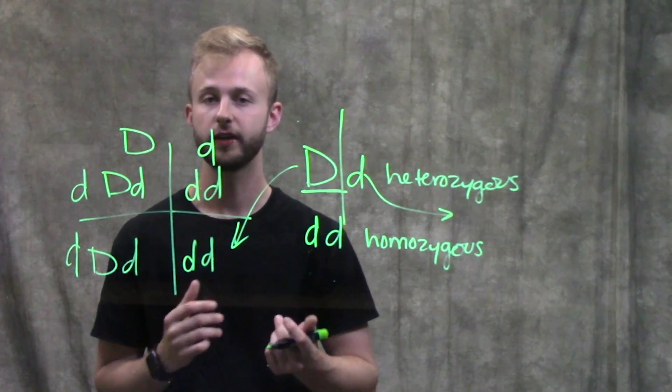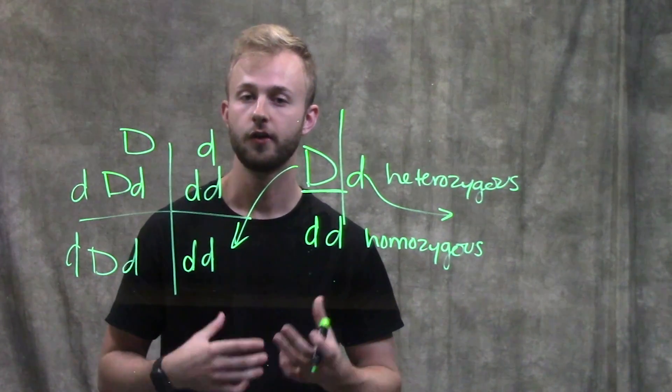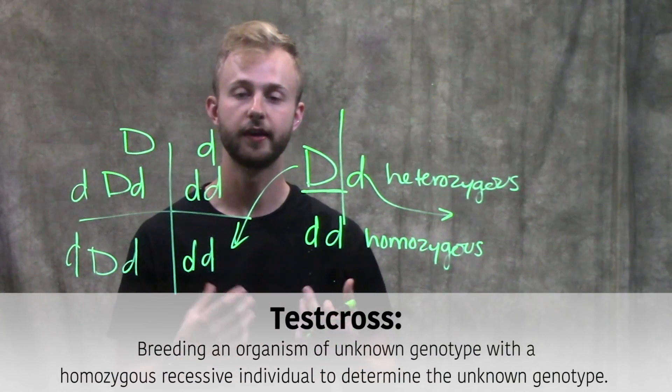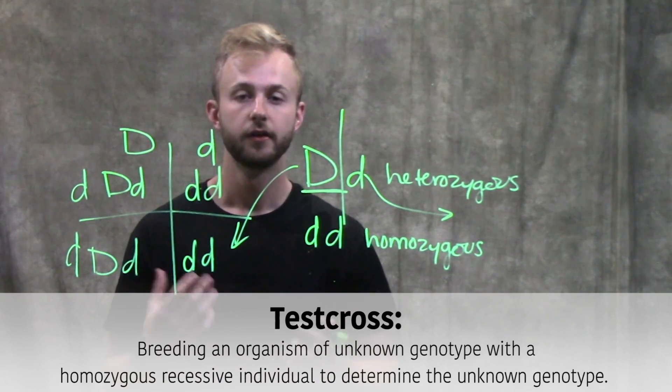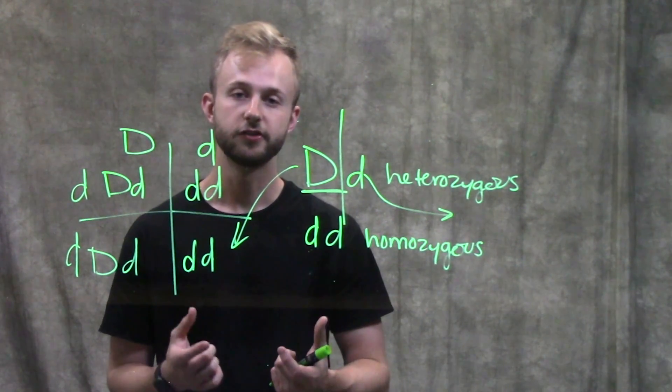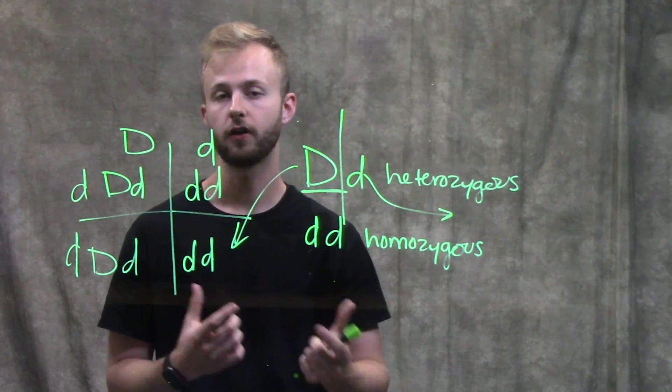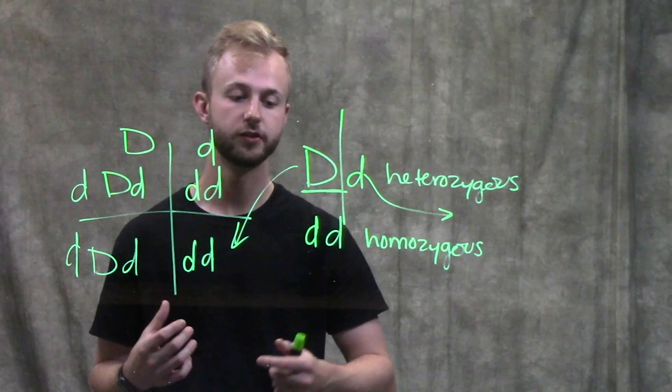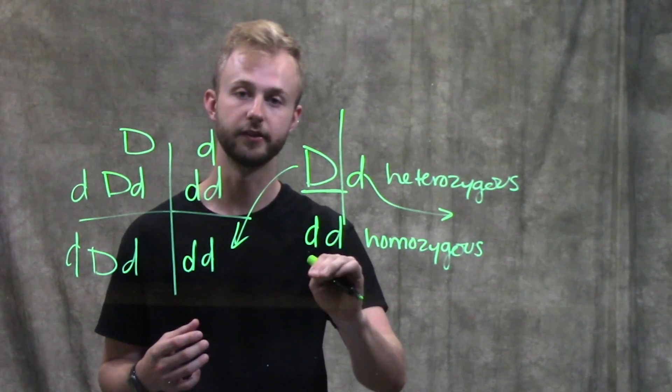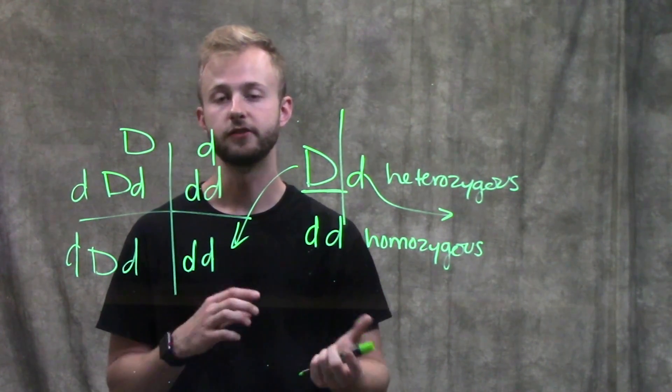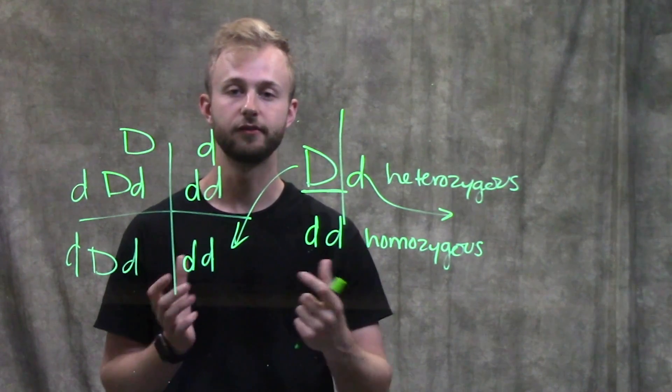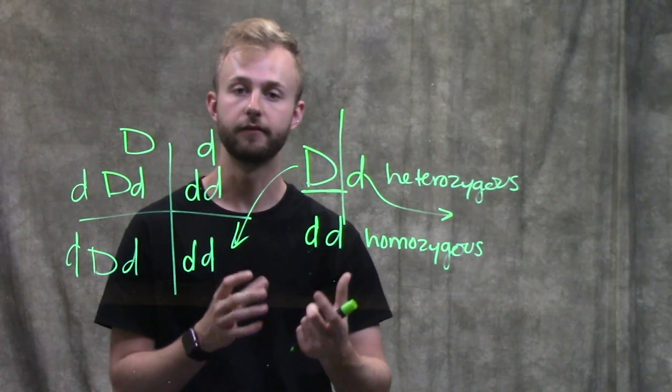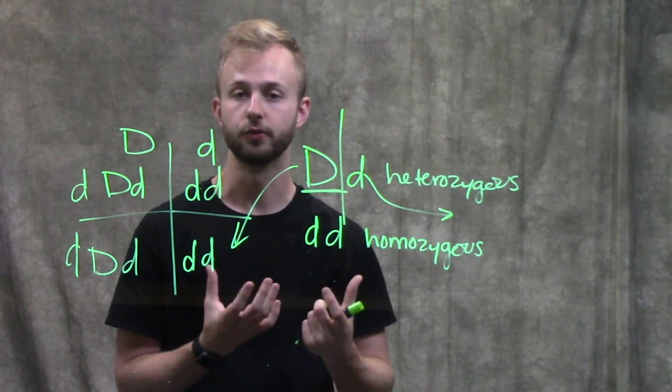More specifically, we can use something called a test cross when we have an individual with an unknown genotype. If we have an individual with an unknown genotype and want to figure out what that genotype is, we can cross them with an individual that is homozygous recessive, meaning they have two lowercase alleles. By doing that, it can help us figure out what the genotype of that unknown individual is.